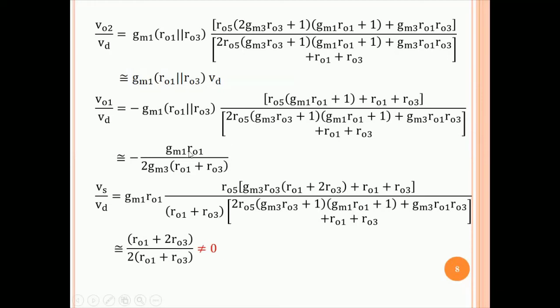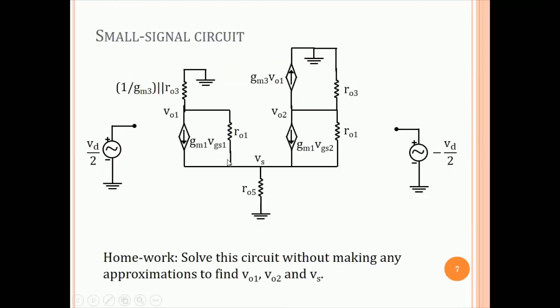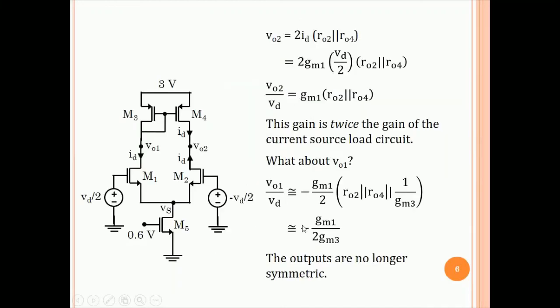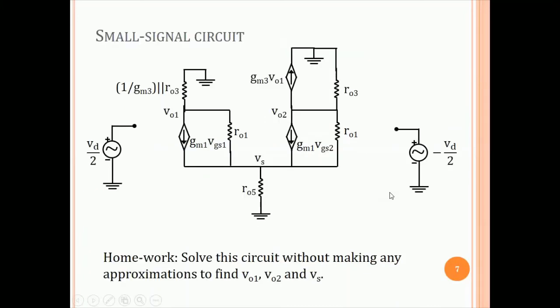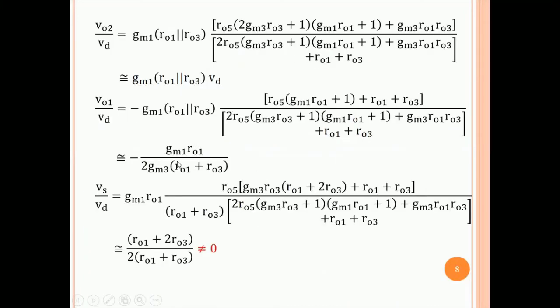And for VO1, we get this expression. And again, approximately, VO1 is minus Gm1, RO1 by 2, Gm3 into RO1 plus RO3, which interestingly is different from the approximate expression we derived. This is minus Gm1 by 2, Gm3. Even this doesn't match the exact expression. The exact expression is actually smaller than the approximate expression. But in any case, the primary point here being that this gain is very different from this gain.